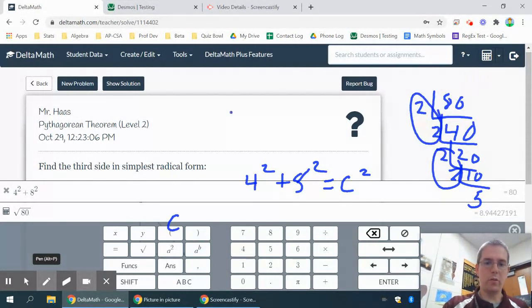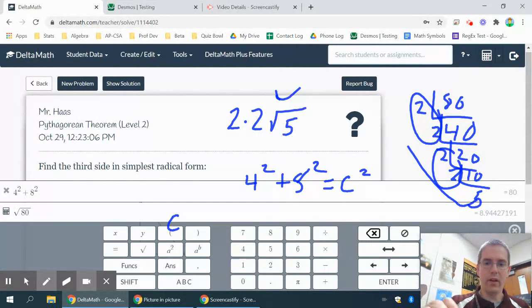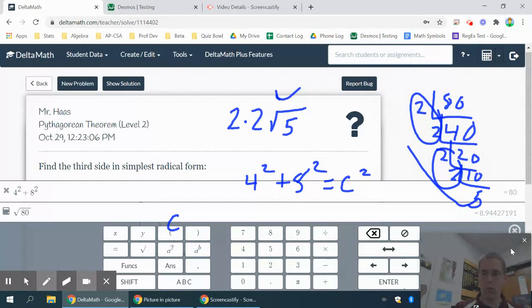Remember, each pair of 2s gives a number outside, so I have 2 times 2. And the 5 is stuck inside. So 2 times 2 root 5. So my answer should be 4 root 5.